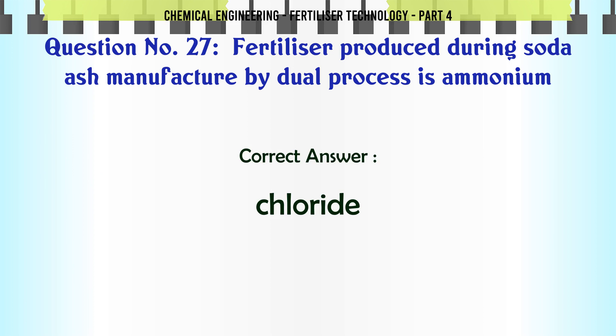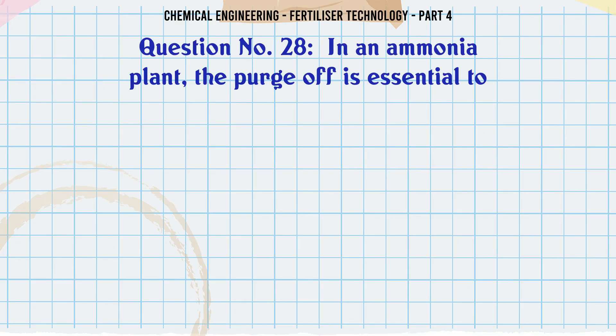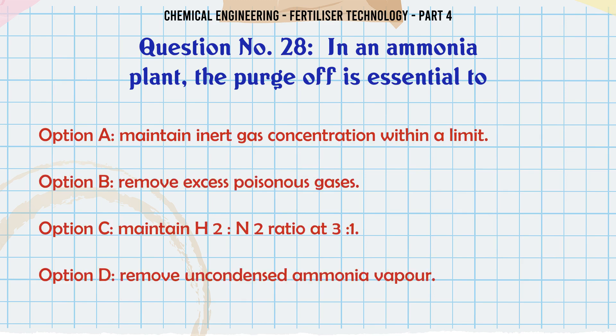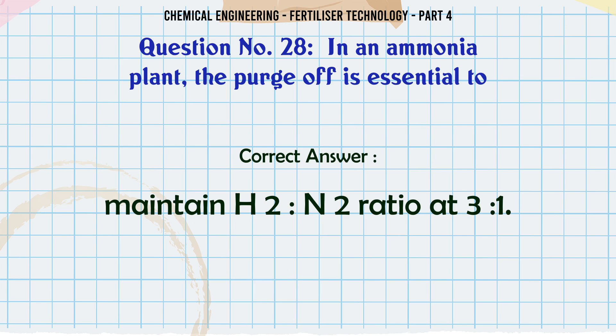In an ammonia plant, the purge is essential to: a. maintain inert gas concentration within a limit, b. remove excess poisonous gases, c. maintain H2:N2 ratio at 3:1, d. remove uncondensed ammonia vapor. The correct answer is: maintain H2:N2 ratio at 3:1.